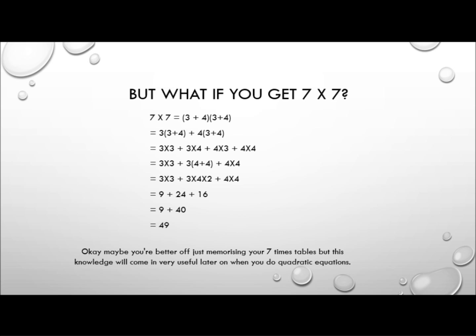What if you get a real stinker like 7 times 7? Well, 7 times 7 is the same as (3 plus 4) all multiplied by (3 plus 4). We can use the distributive property and say that's the same as 3 times (3 plus 4) plus 4 times (3 plus 4). Applying the distributive property again gives us 3 times 3 plus 3 times 4 plus 4 times 3 plus 4 times 4. We've already shown that 3 times 4 plus 4 times 3 equals 3 times 4 times 2, which is 24. So that gives us 9 plus 24 plus 16.